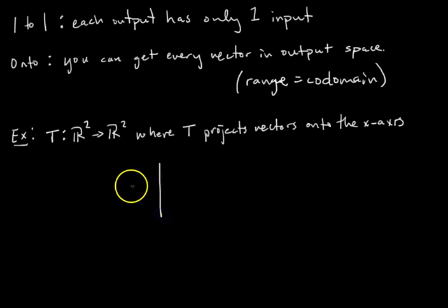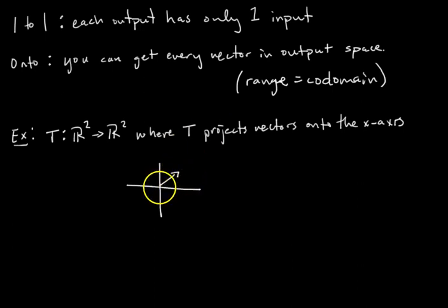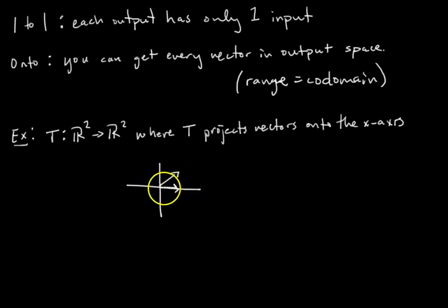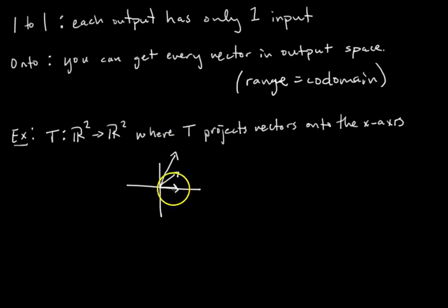Let's think about some vectors. Take the vector (1,1) and put it in as an input. You get this vector projected onto the x-axis — the y component goes away and the x component stays the same, giving output (1,0). But here's the critical thing: if instead I input the vector (1,2), what's the output? It's the same output — you project (1,2) onto the x-axis and you get the same vector (1,0).